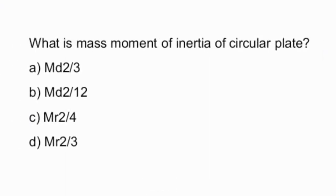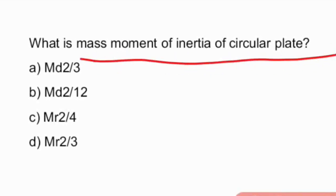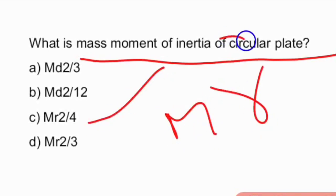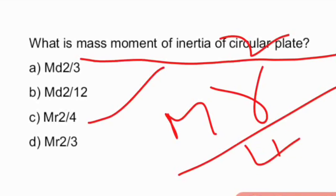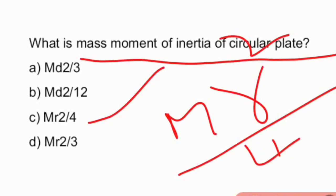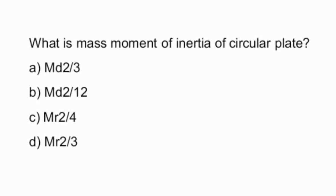What is the mass moment of inertia of a circular plate? The answer is MR²/4. The mass moment of inertia of a circular plate is MR²/4.